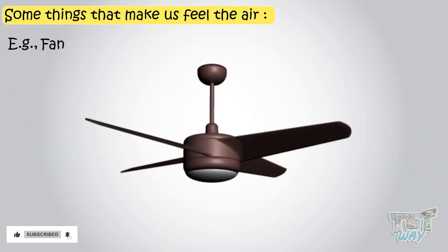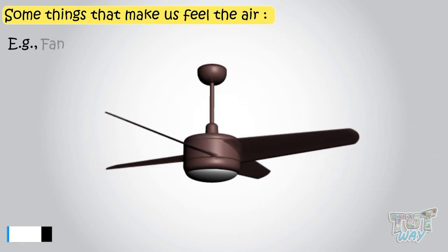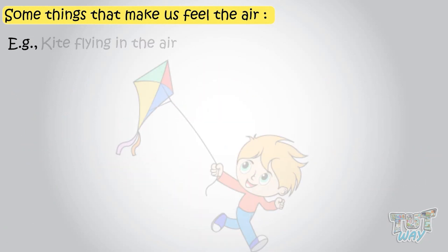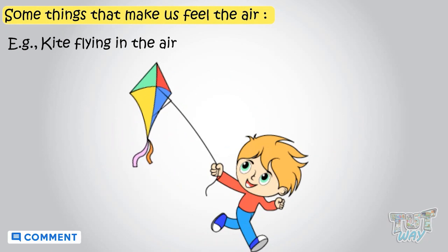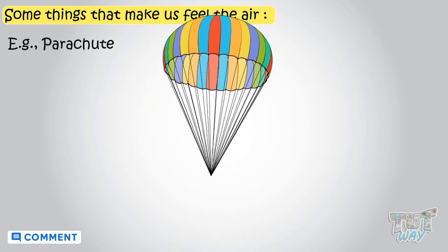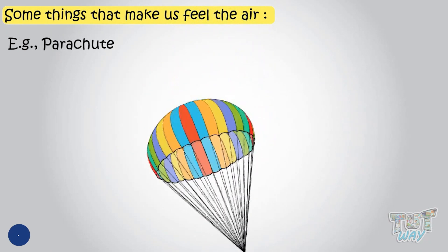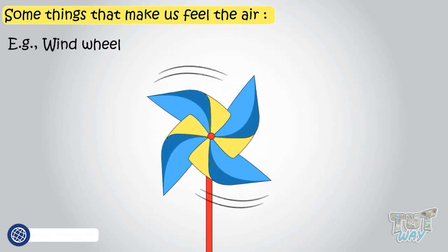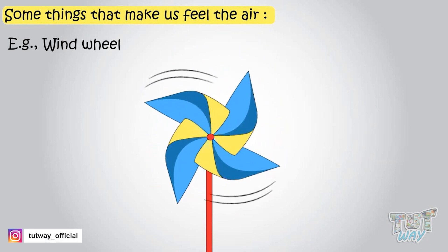When we switch on the fan, when a hairdryer is switched on, when you see a kite flying in the air, a parachute in the air, a wind wheel - all these examples show us the presence of air.